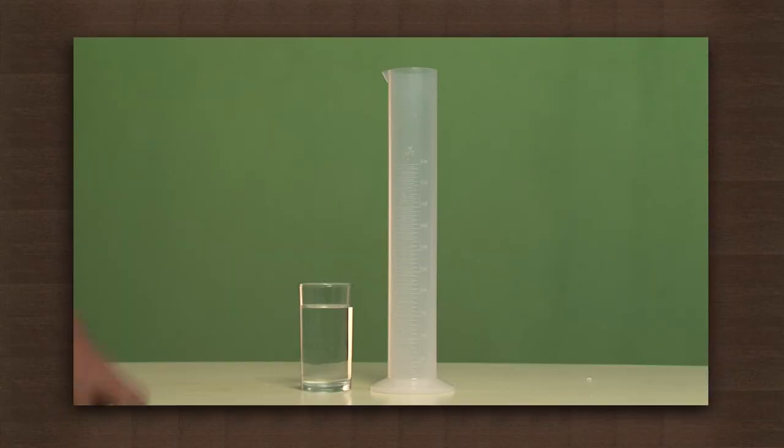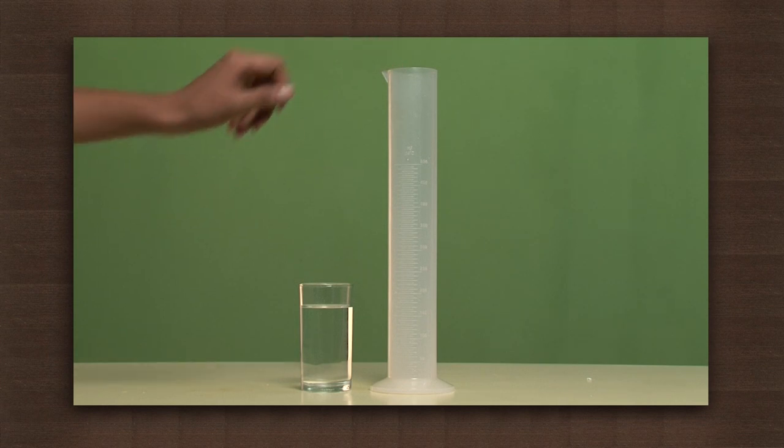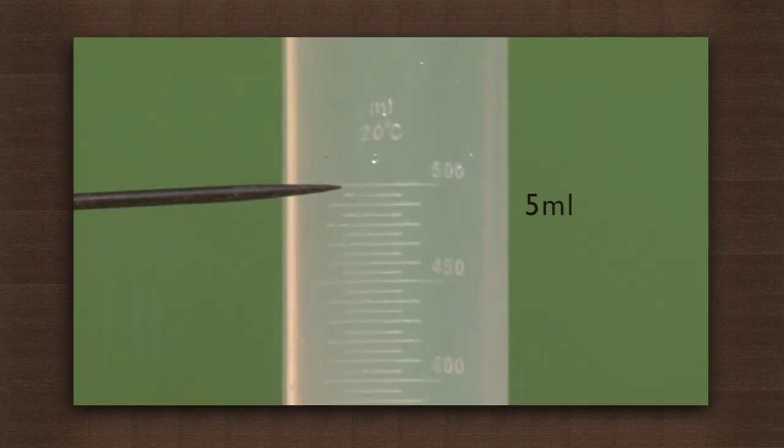A measuring cylinder is used to measure the volume of a liquid. Here we have a measuring cylinder with a least count of 5 millilitres.